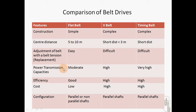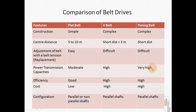As far as the power transmission capacities are concerned, flat belts are used for comparatively low or moderate power transmission, whereas V belts can be used for high power transmission, and timing belts can be used for even very high power transmission because they are almost positive type of drives.